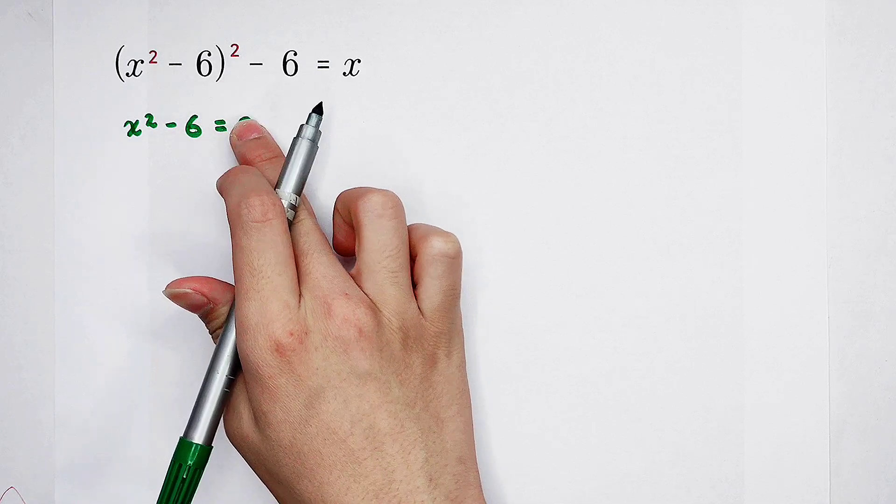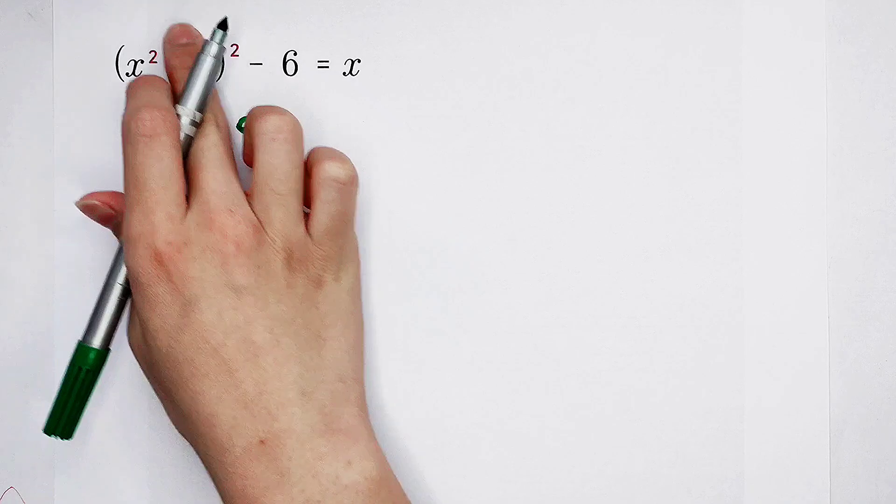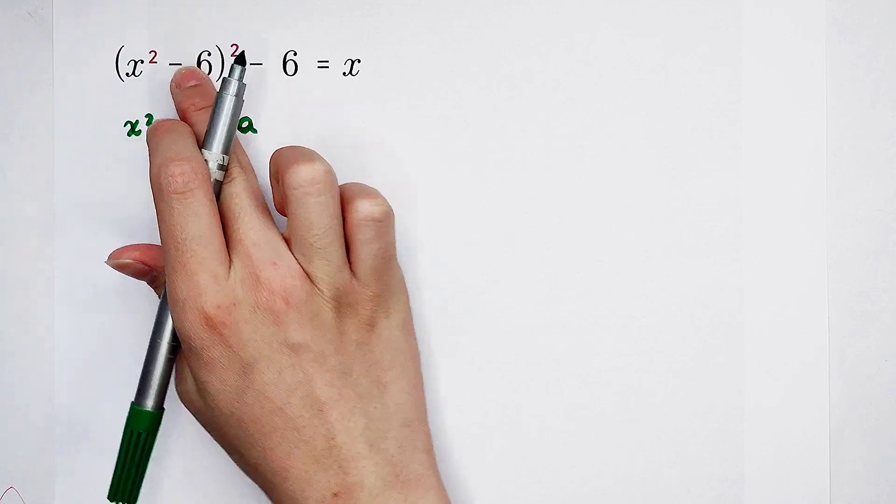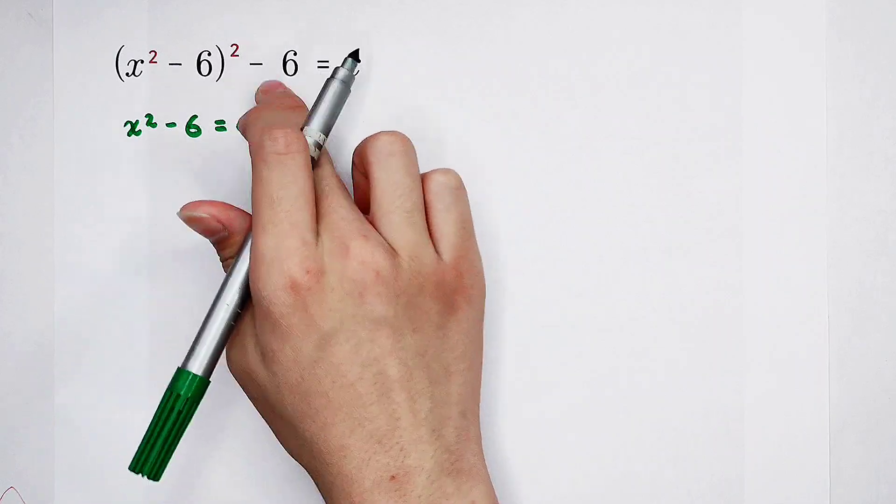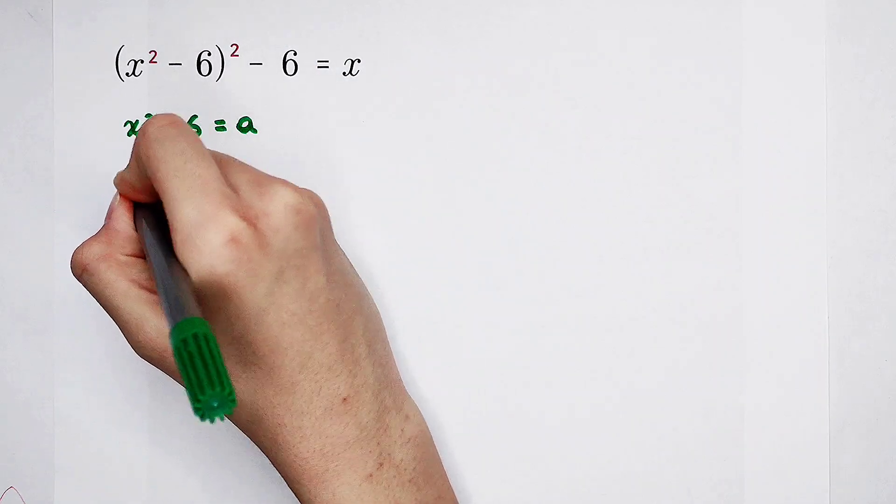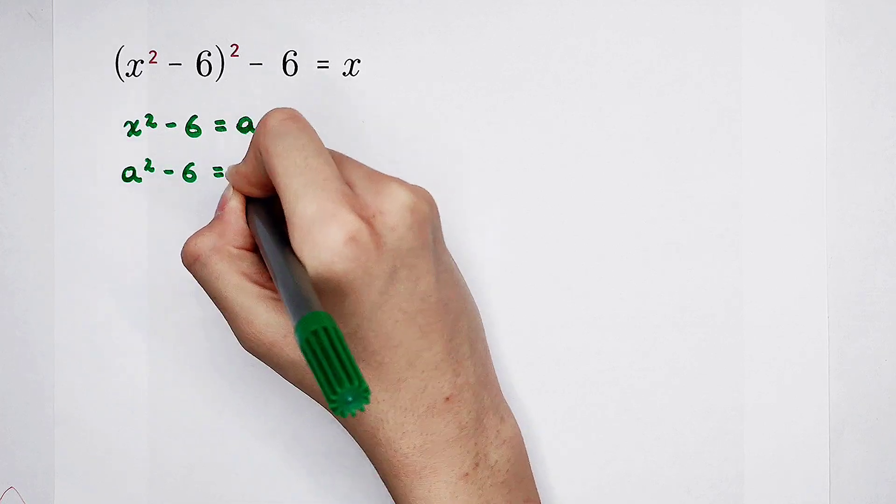A is this thing. A squared minus 6 is equal to x. Substitute this a into our original equation. So we can get a squared minus 6 is x.